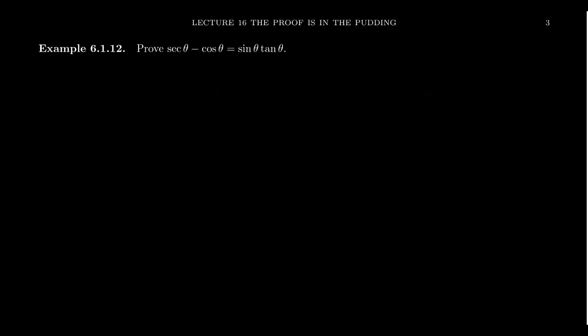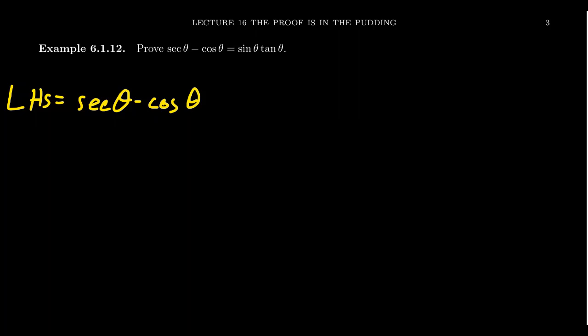Let's prove that secant θ minus cosine θ equals sine θ times tangent θ. I would think that the difference of trig functions is the more complicated side, because with products and fractions it's easier to cancel terms. So I'll start with the left-hand side: secant θ minus cosine θ. The right-hand side will involve sine and tangent. At the very least, I can write everything in terms of sines and cosines — secant becomes 1 over cosine, giving 1 over cosine θ minus cosine θ. Then I can find a common denominator.